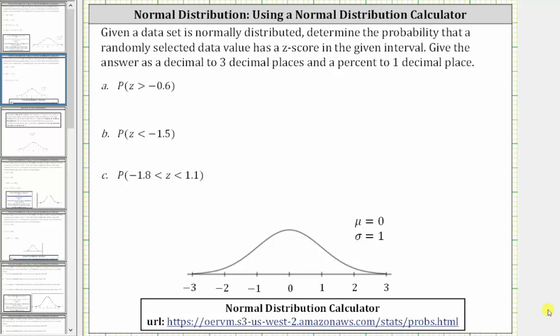Given a data set is normally distributed, determine the probability that a randomly selected data value has a z-score in the given interval. Give the answer as a decimal to three decimal places and a percent to one decimal place. For part A, we're asked to find the probability the z-score is greater than negative 0.6.